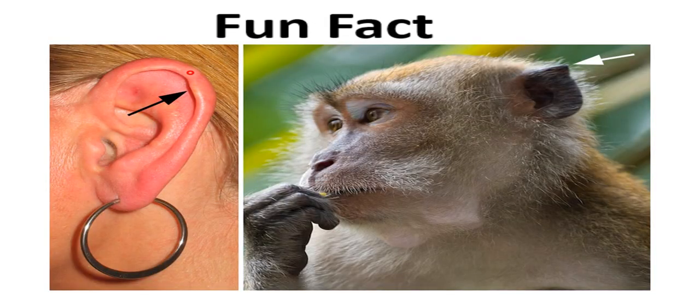On the helix there is a small tubercle known as Darwin's tubercle, which is the vestige of the pointed ear seen in lower animals and is very well developed in intrauterine life.